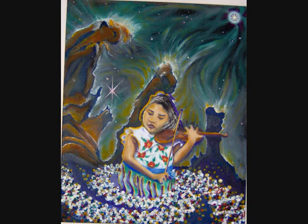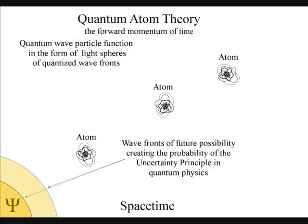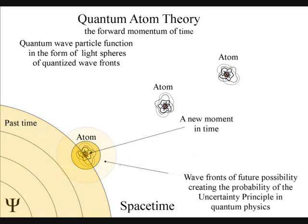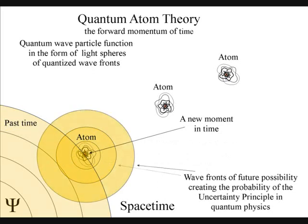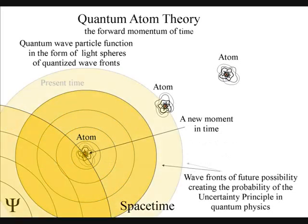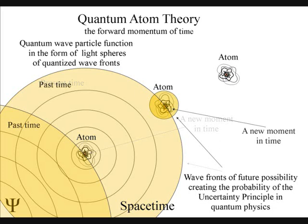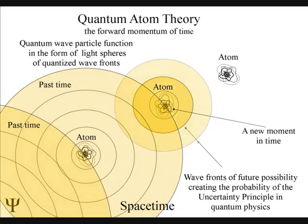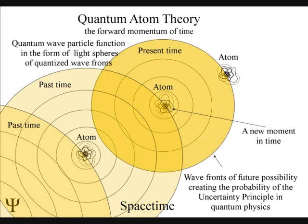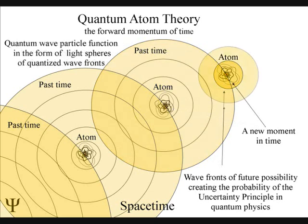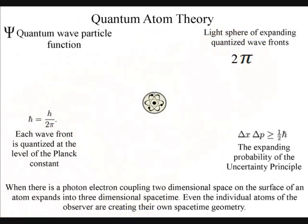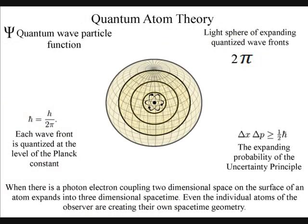Time is created at the quantum level of the atoms by the emission and absorption of electromagnetic radiation from one atom to another. When light comes in contact with the electrons on the surface of an atom, there will be a photon-electron coupling. This will cause a quantum leap of energy, creating a wave function of future possibilities. In this way, two-dimensional space on the surface of an atom expands into three-dimensional spacetime.